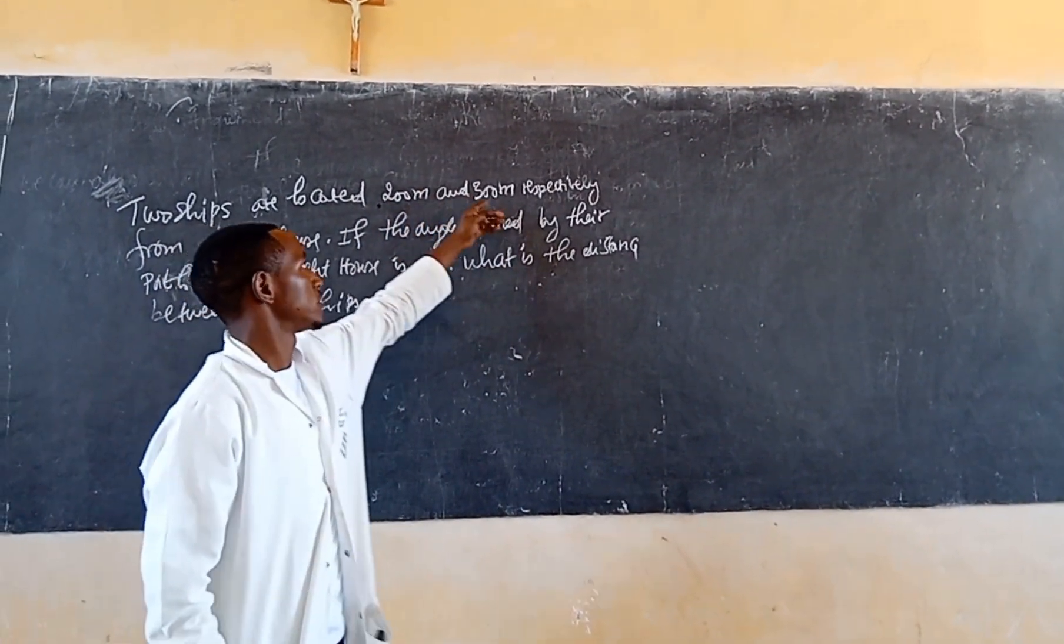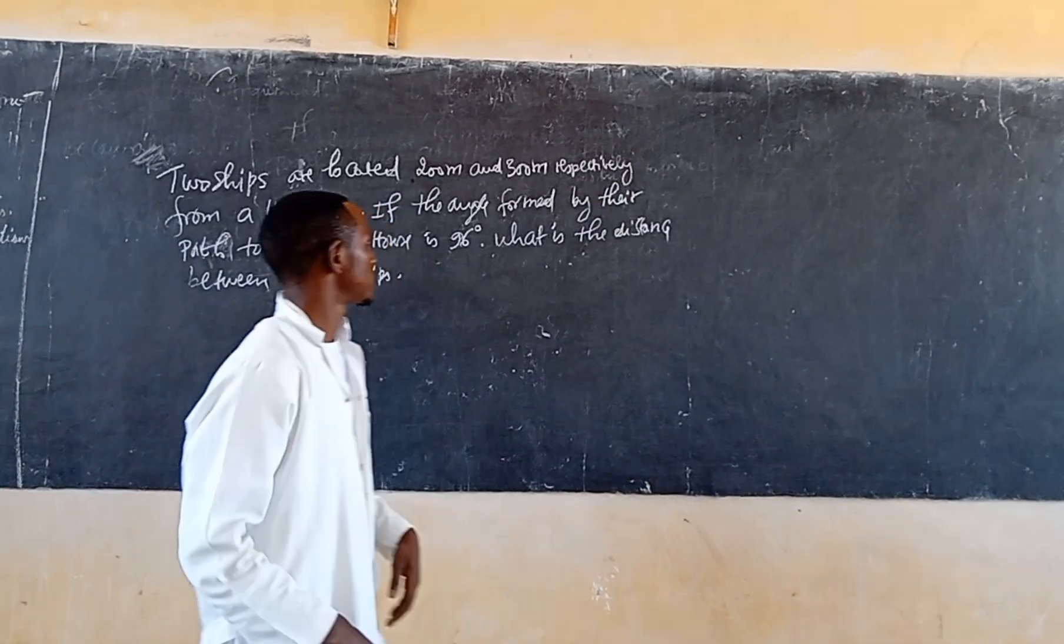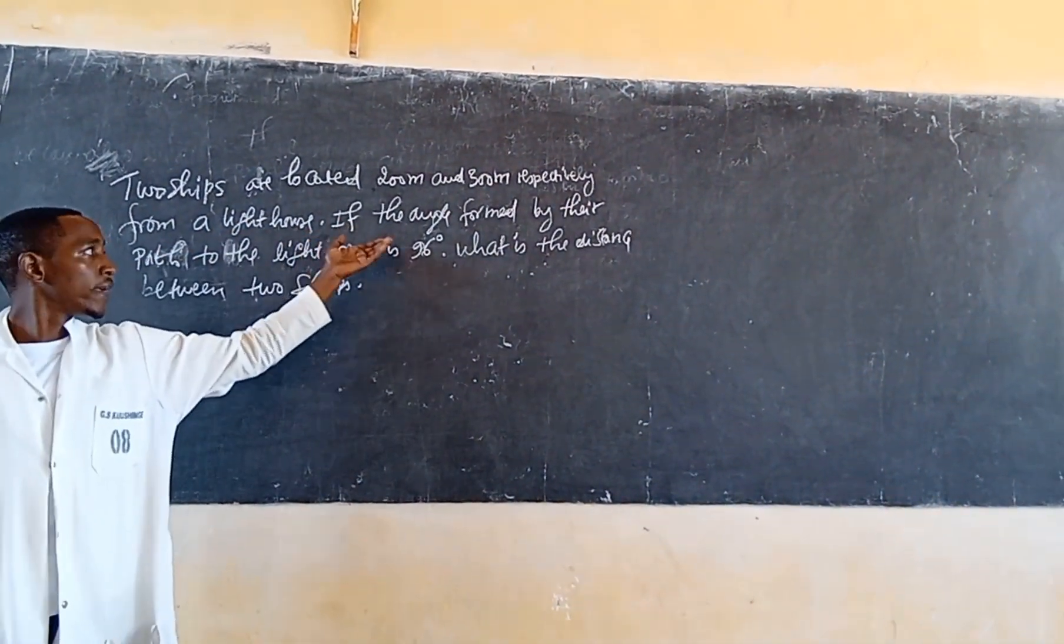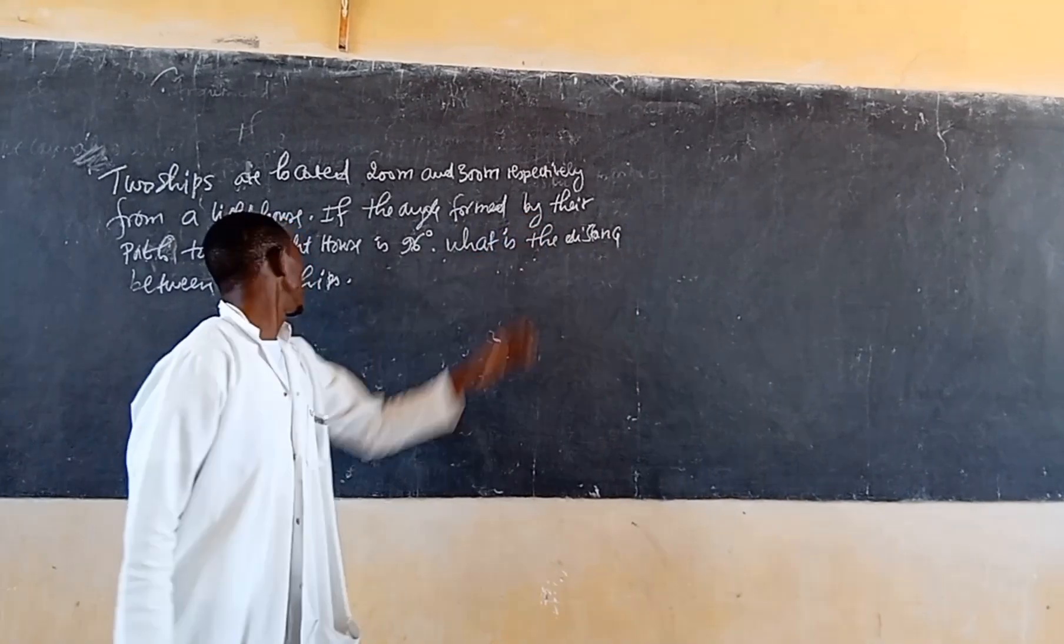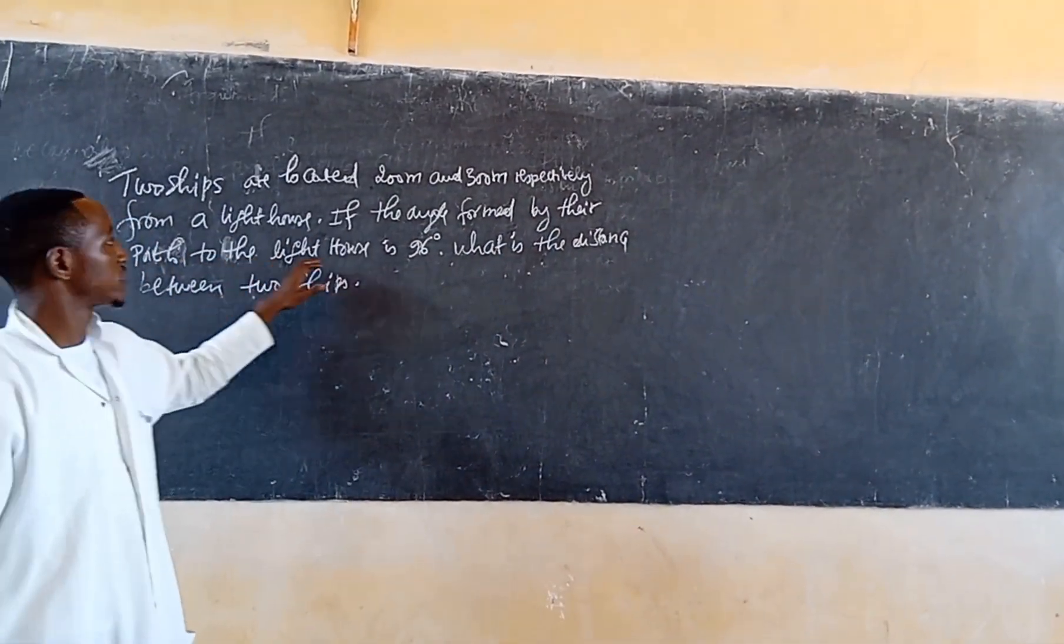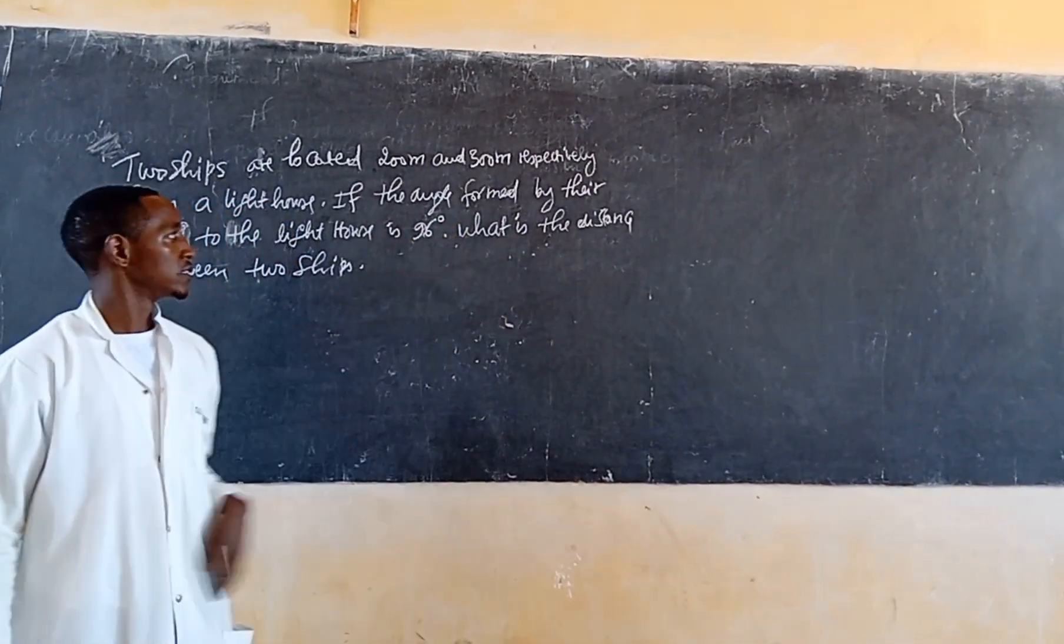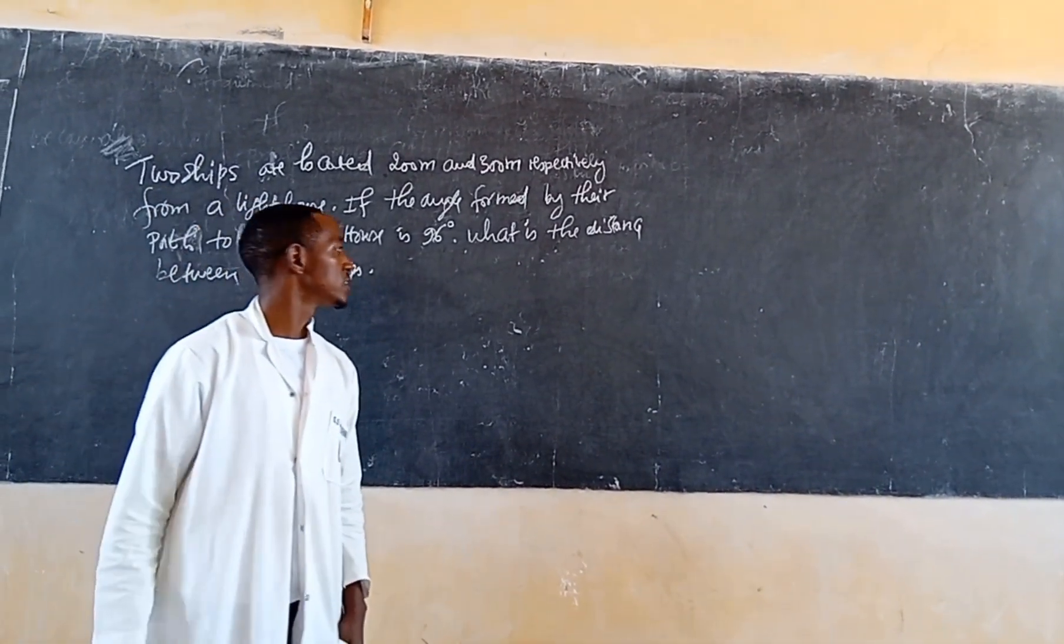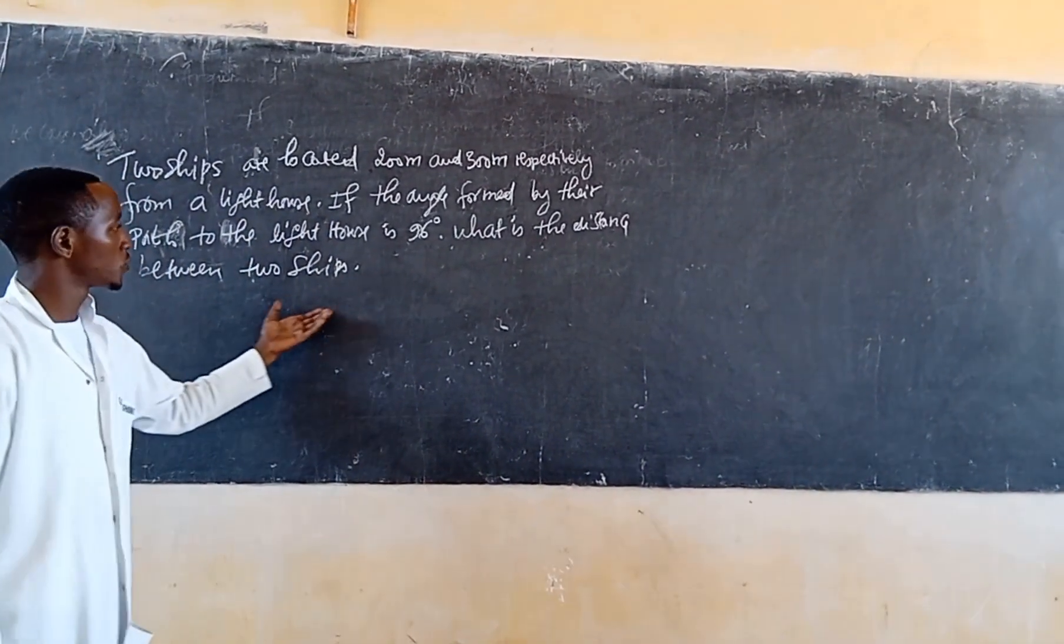In 200m and 300m respectively, through a lighthouse. If the angle from the lighthouse is equal to 86 degrees, find the distance between two ships.